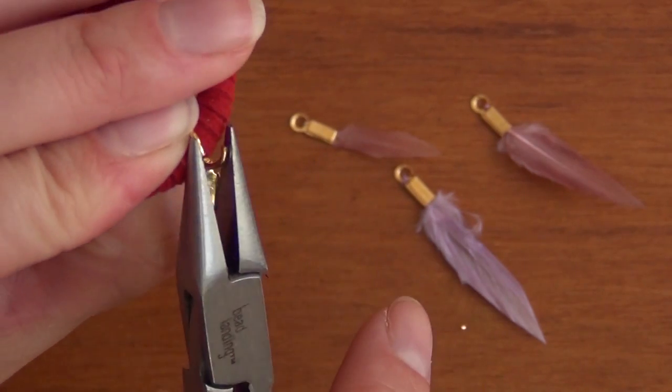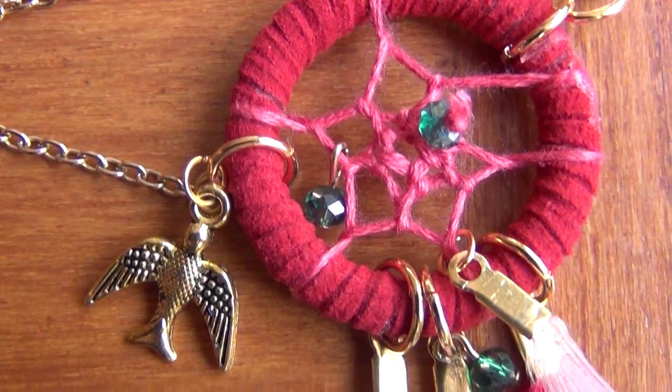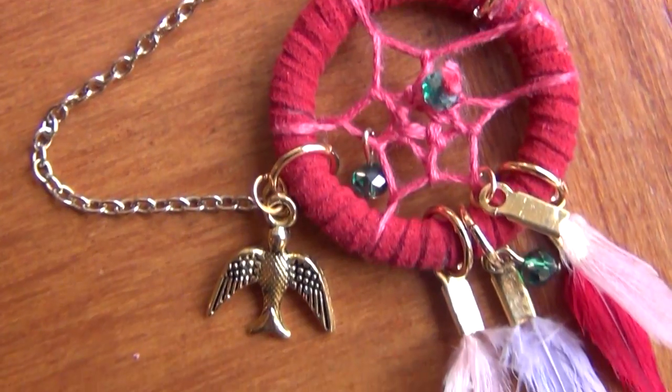Once you're done with that, use large jump rings to attach your feathers all to one side of your dreamcatcher, and then attach any other beads or charms that you want to add to your dreamcatcher.